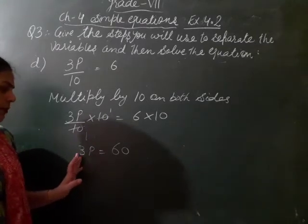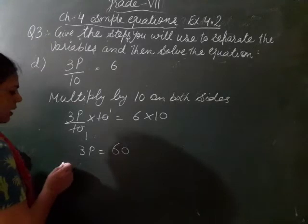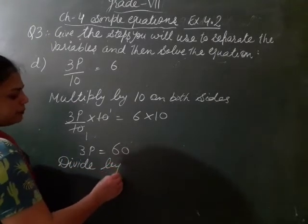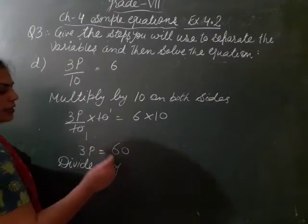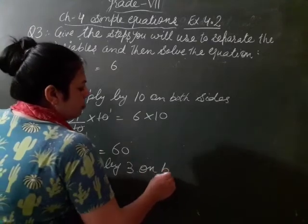Now what is the number with variable? That is 3 multiplying with variable. So what are our second step? We divide. Multiply kya opposite kya hoga? Divide by which number is multiplying to p? That is 3. So we divide by 3 on both sides.